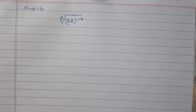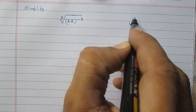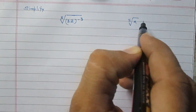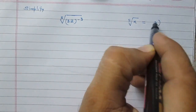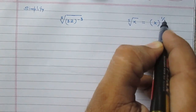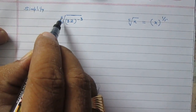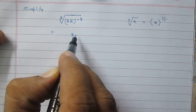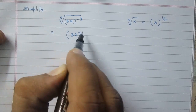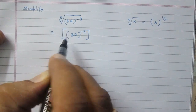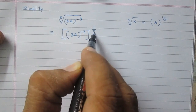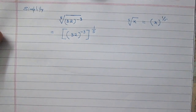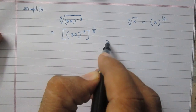Simplify the fifth root of 32 raised to the power minus 3. We know that the fifth root of x means x raised to the power 1 upon 5. So the fifth root of 32 raised to the power minus 3 is equal to 32 raised to the power minus 3, raised to the power 1 upon 5.